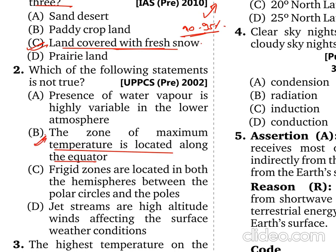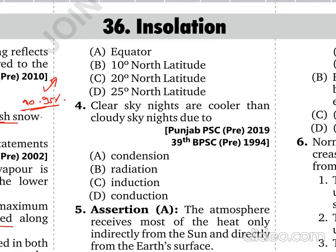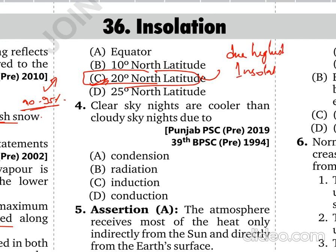Insolation is the important factor in deciding temperature. The place that receives most of the high insolation is around 20° North latitude, and that is the reason the highest temperature on Earth is recorded at 20° North latitude, due to high incoming solar radiation.